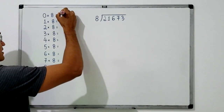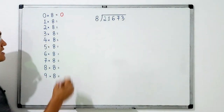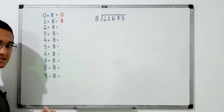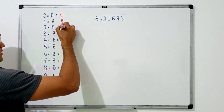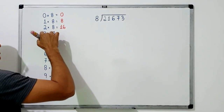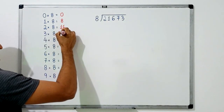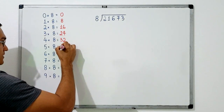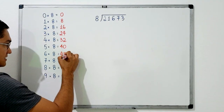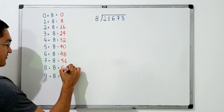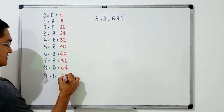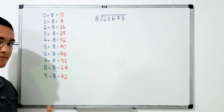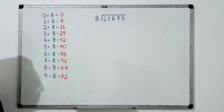0 times 8 is 0, because it's 8 not even once. 1 times 8 is 8. Adding 8 each time, we find 16 for 2 times 8. Then comes 24, 32, 40, 48, 56, 64, and finally 72. With the multiplication table available, things become very easy, so let's get started.